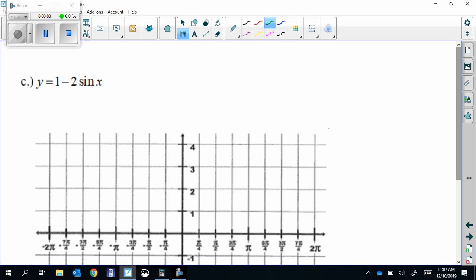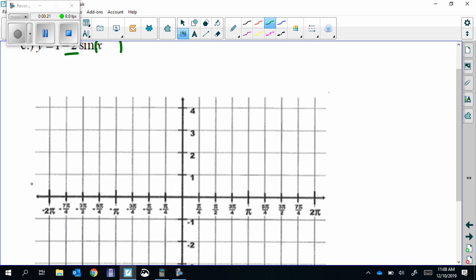We have another graph. This one, there's nothing with the X, so there's no phase shift, there's no period change, none of that. It just has an amplitude of 2. It's negative, so it's reflected, and it's shifted up 1. That's what this 1 means here. So that's our midline, shifted up 1.